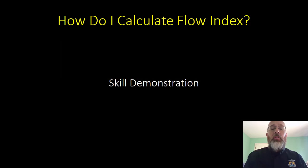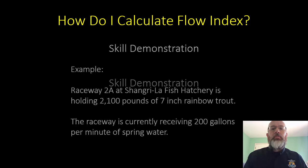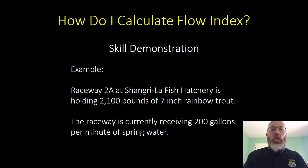Just like our other videos, we're going to have a skill demonstration. I'm going to show you how to do the calculation, and then you'll have a chance to practice. Raceway 2A at the Shangri-La fish hatchery is holding 2,100 pounds of 7-inch rainbow trout. The raceway is currently receiving 200 gallons per minute of spring water. Let's calculate the flow index.